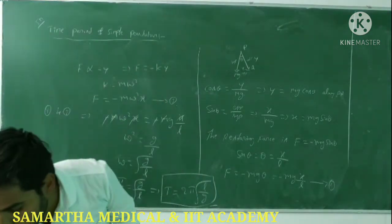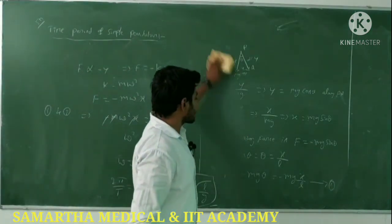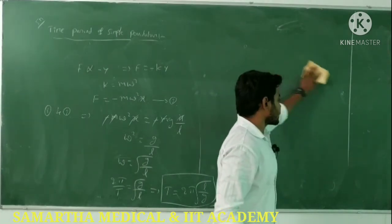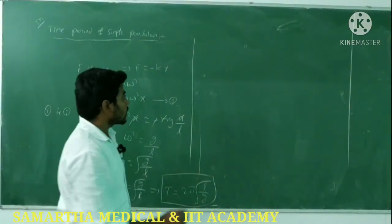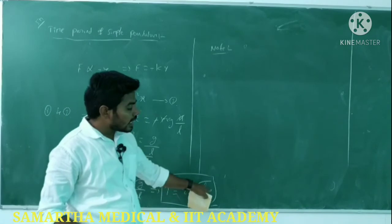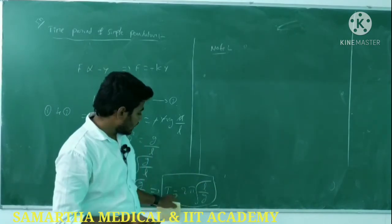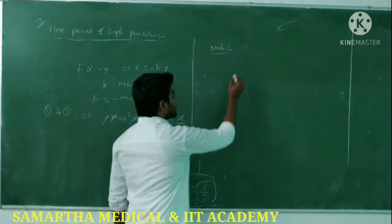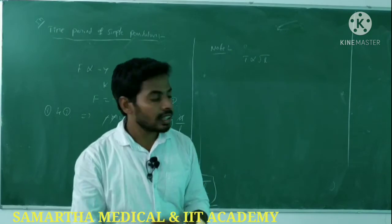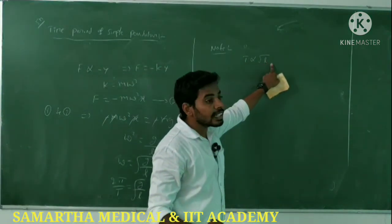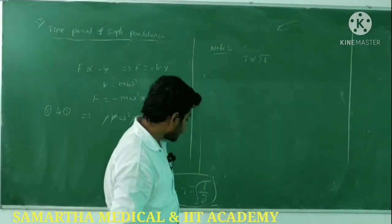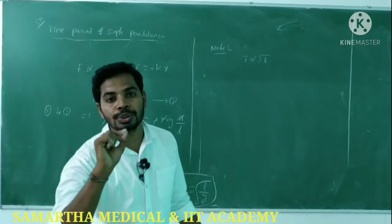Some cases for variation of the simple pendulum: the time period depends on the length L, where T is directly proportional to √L. If the length increases by N times, the time period increases by √N times. The time period also depends on acceleration due to gravity g.